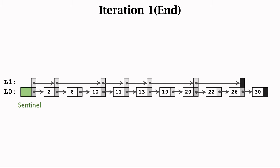This is the end of the first iteration. Now the skip list has two layers. L0 is the original linked list, and L1 stores pointers that allow skipping. Following the L1 layer, we can reach the middle faster.